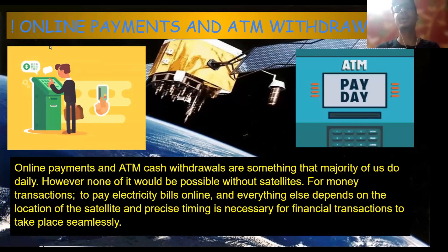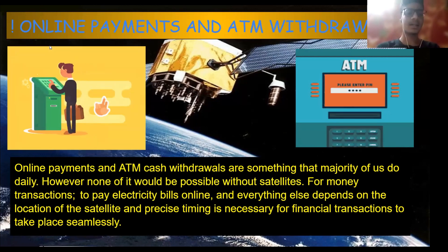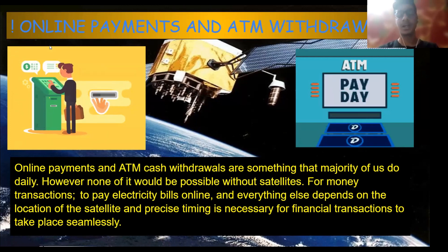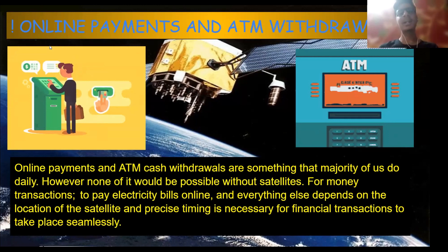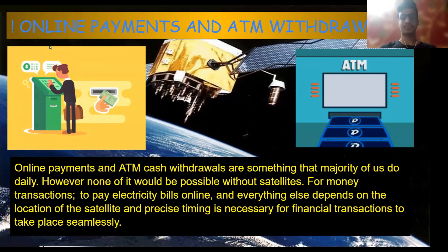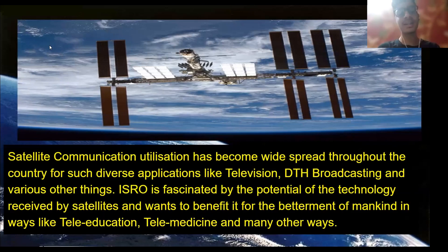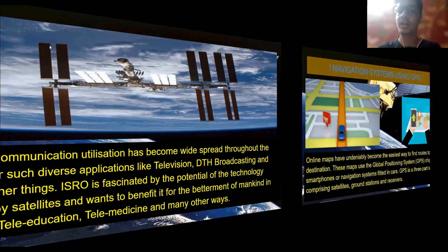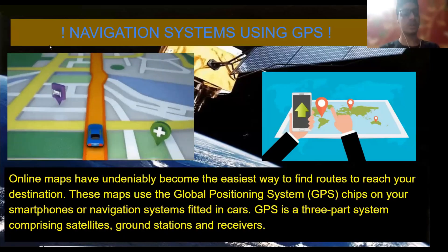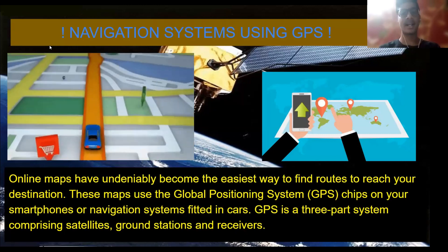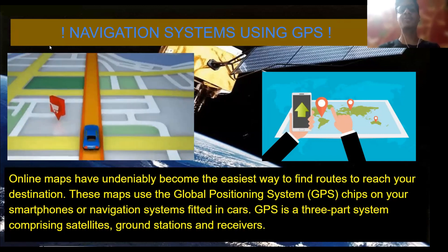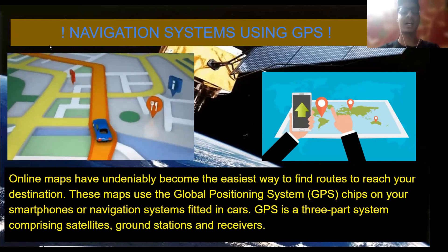Online transactions are another way satellites help us — when your parents pay different bills from home, they do so with the help of satellites, which requires precise timing. Another area is communication technology, where satellites have a big diversity of applications like DTH, broadcasting, television, and more. ISRO is fascinated by this and wants to extend it to tele-education and telemedicine. GPS — Global Positioning System — is a three-part system comprising satellites, ground stations, and receivers. GPS chips in our phones, laptops, and car navigation systems show us our location.